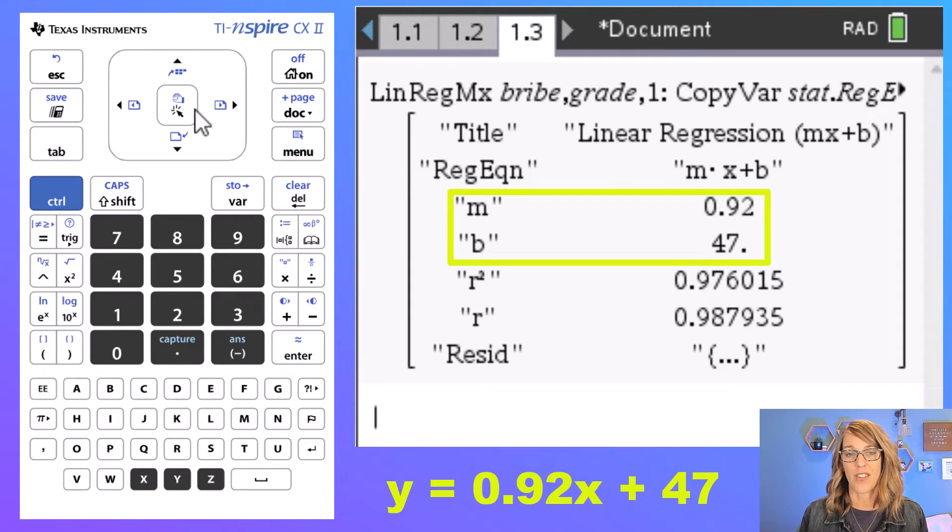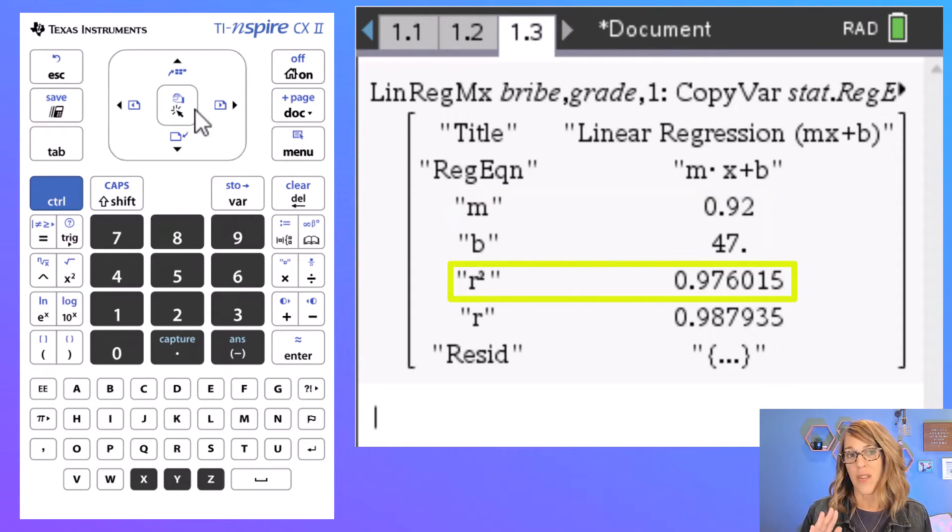This also gives us our r squared value. Those range anywhere from zero to one, one being a really strong correlation and zero being no correlation. And the r value is great for linear correlations because it tells me this is a positive correlation, meaning that that graph increases.